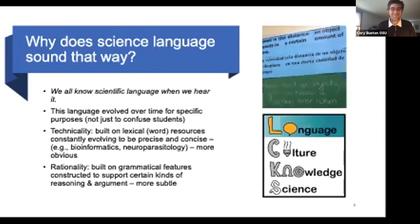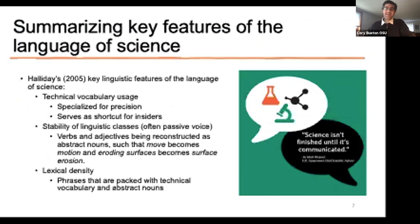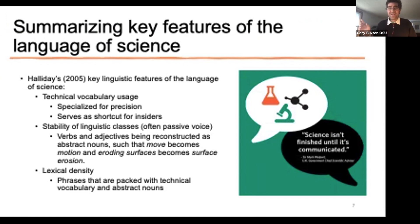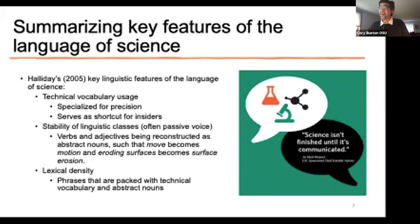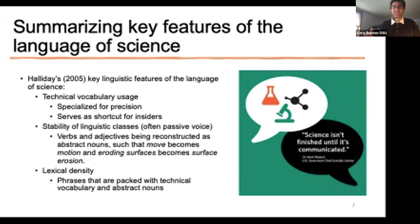Michael Halliday is a linguist whose work I really like on this. He basically talks about the language of science as having three main types of features. Technical vocabulary usage is definitely one of those — I'm not saying we shouldn't spend time teaching science vocabulary, because that helps kids build up the technical side of language. But we also need to think about the grammar and language structure. What Halliday found is that the language of science is often in passive voice.